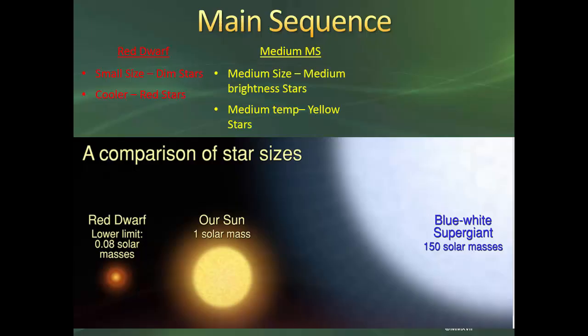Our medium main sequence stars are medium-sized, medium brightness, medium temperature, and yellow. And finally, our blue giants are very large, very bright because of their size, they are very hot, and they are blue stars because of their temperature.